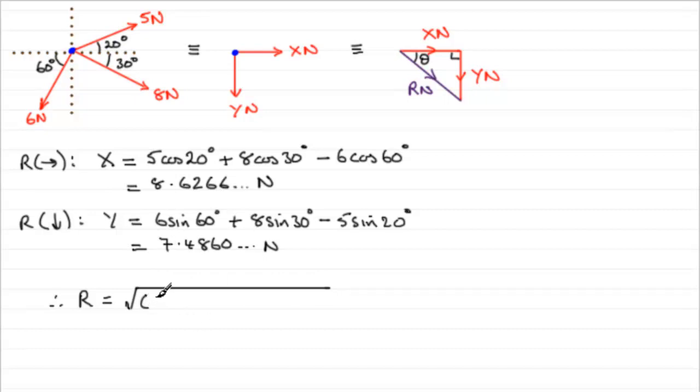So in other words we just square 8.6266 and so on, add it to y squared 7.4860 and so on squared. Okay work that out and you should find that you get 11.421 and so on. And let's round that to three significant figures. That would be 11.4 newtons to 3sf.